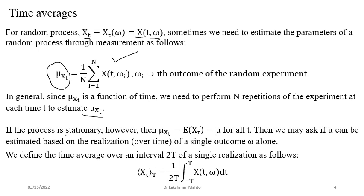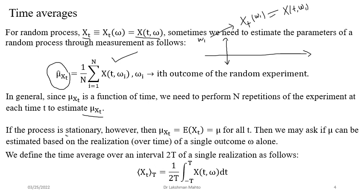In the definition of a random process, if you fix the outcome you get a realization — we call it a sample function. If you fix outcome omega1, with respect to that you get a realization of the random process, which you can also call a sample path. Omega1 is now fixed so there is no more randomness — it is just a function of time and it evolves with respect to time. So from that one realization, you observe how the sample path varies with respect to time.